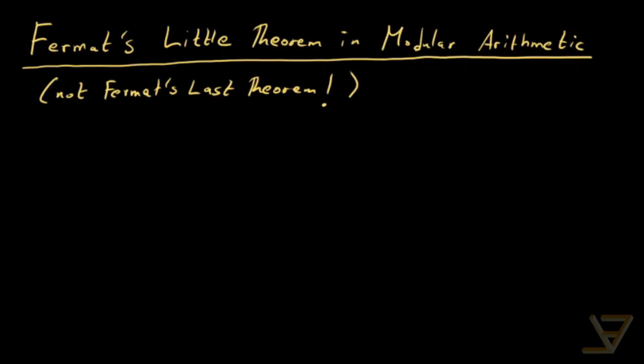Hi, everyone. Let's talk about Fermat's Little Theorem in modular arithmetic. Just to be clear, this is not Fermat's last theorem, which talks about solutions to the Diophantine equation a to the n plus b to the n equals c to the n, which just might be the hardest math problem that has ever been solved. It took 350 years. So it's not this thing.